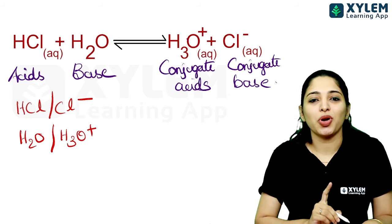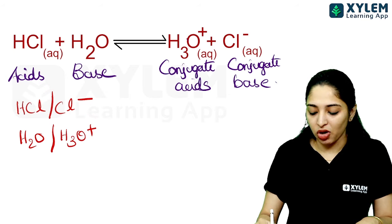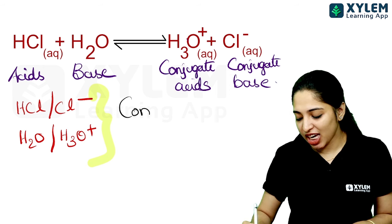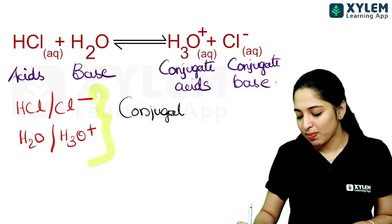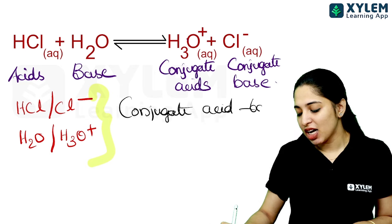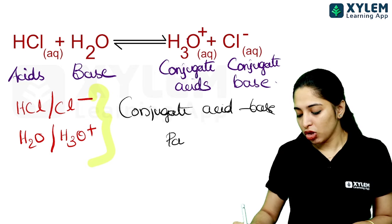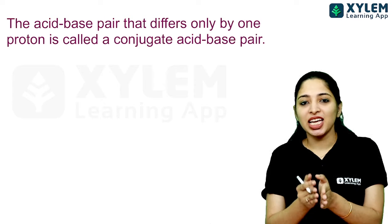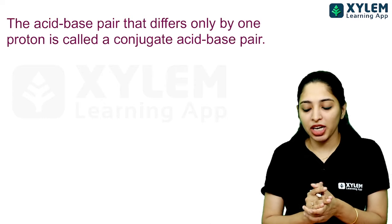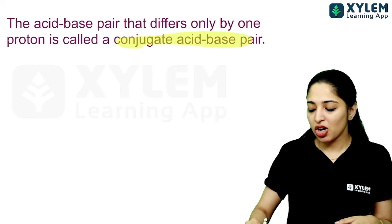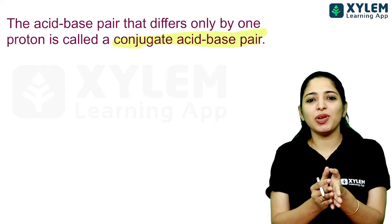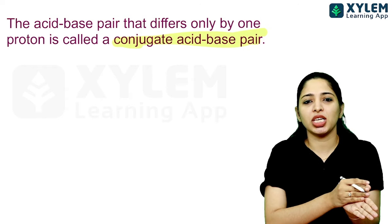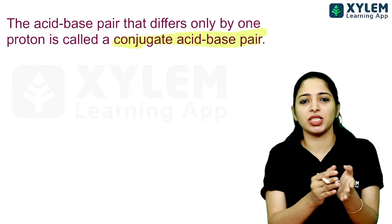In these two pairs, there is one H+ — one proton difference. The name is conjugate acid-base pairs. The acid-base pairs that differ by only one proton are called conjugate acid-base pairs. If you are asked to find the conjugate acid of a species or the conjugate base of a species, this is the concept.